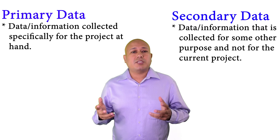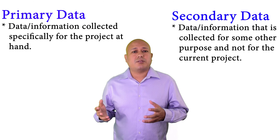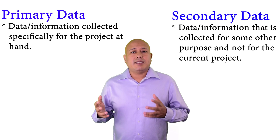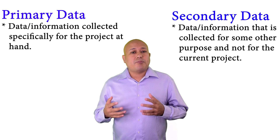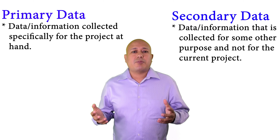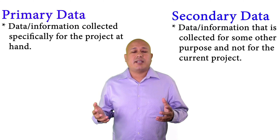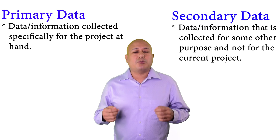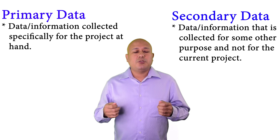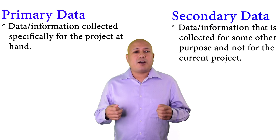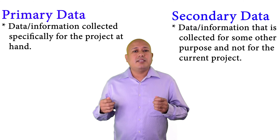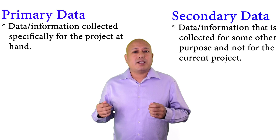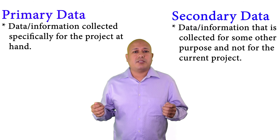The secondary data may have been collected by yourself, your company, or a third party — but it was collected for a different project or a different question. So the big difference is that primary data is specific to the project you want to do right now, whereas secondary data has generally already been collected for some other purpose.